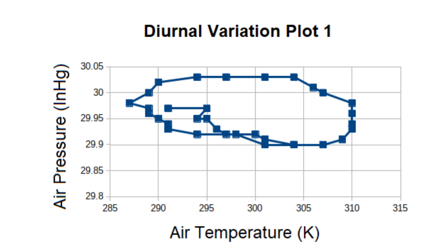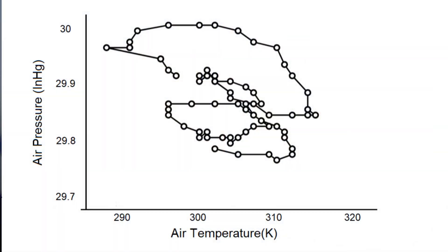Then I collected more data from the source he used. Here is a second plot of pressure versus temperature. Obviously the pattern is more complicated than the first one. Still, the variation in air pressure during this period of 48 hours was still small, between 29.8 and 30 inch mercury, or 1009 to 1016 hectopascal.